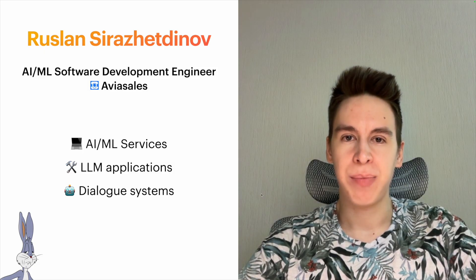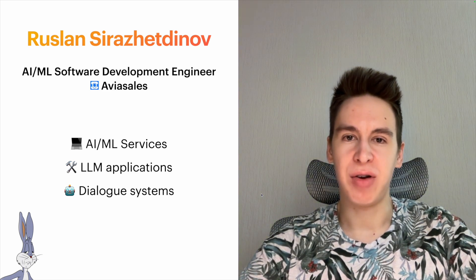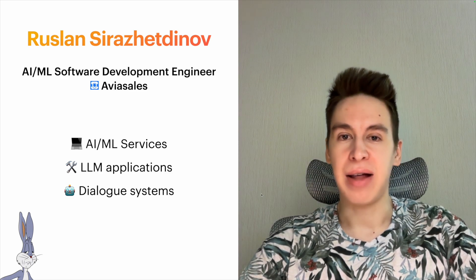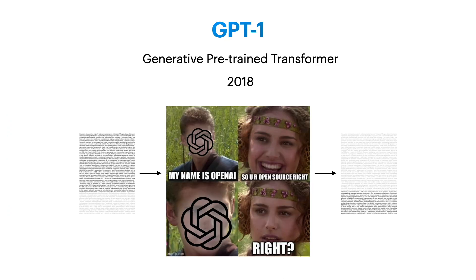My name is Ruslan Serzhidinov, I'm a software development engineer at Avia Sales, responsible for the development of various machine learning services, LLM applications, and dialogue systems. In 2017, Google Research presented a paper called 'Attention Is All You Need,' where the Transformer architecture was presented — the basic architecture for all modern large language models. In 2018, GPT-1 was presented by OpenAI, with the main idea of giving the model a text as input and generating output.